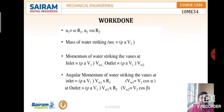The mass of water striking per second is equal to rho times a times v1, where rho is the density of water, a is the area of the jet, and v1 is the velocity of water striking the blade. So the mass flow rate of water striking per second equals rho times a times v1.